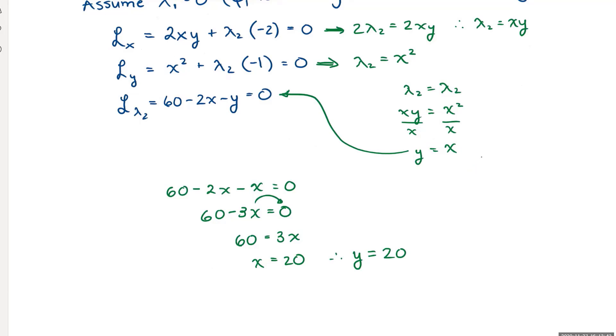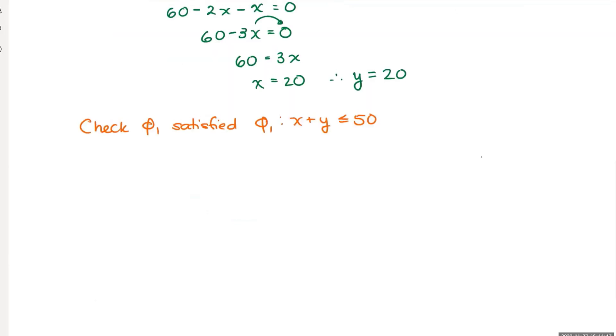What do I do next? I have to check my assumption that constraint 1 is going to be satisfied. So I'm going to check that constraint 1 is satisfied. That was my assumption. So constraint 1 was that x plus y is less than or equal to 50. So substituting my x and y values here, I have 20 for x and 20 for y. This gives me 40, which indeed is less than 50. I'm happy.